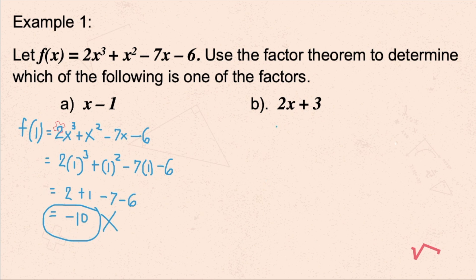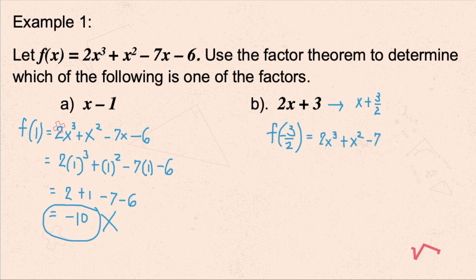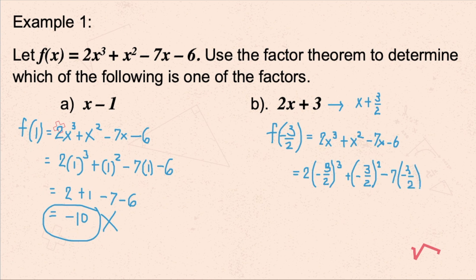Let's have the second problem. The given binomial or divisor is 2x plus 3. Meaning to say, there is a leading coefficient that is not 1, so divide the constant by 2. Therefore, the value of x here is negative 3 halves. Using f of negative 3 halves, substituting the value into the given f of x, this will be 2 times negative 3 halves raised to the third power plus negative 3 halves to the second power minus 7 times negative 3 halves minus 6.